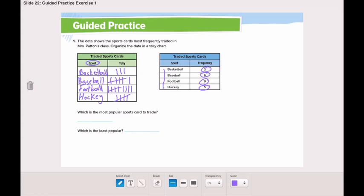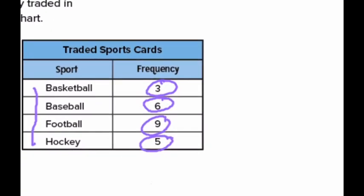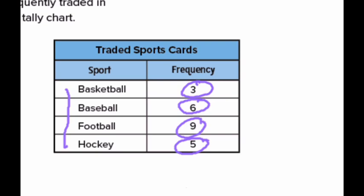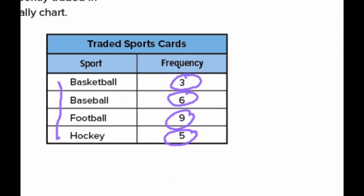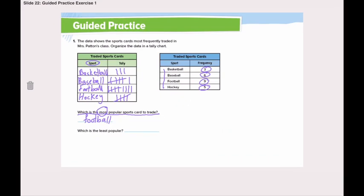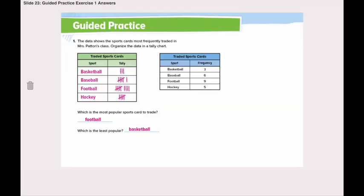Now let's answer the question: which is the most popular sports card to trade? Most means I want the highest number. The highest number here is nine, which is for football. So football has the most. Which is the least? Going back to our frequency table, the lowest number is three, which is for basketball. So basketball is the least popular, and football is the most popular. That finishes question one in the guided practice.